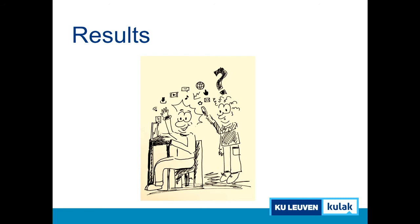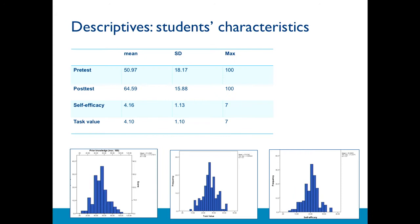For the results — I can use this cartoon because I drew it myself. Looking at the descriptives, comparing pre-test and post-test we see there was a learning gain. I added these graphs to show that there were a lot of differences among students. Some had high prior knowledge, some lower. Some were very motivated to learn French, some were not at all. Self-efficacy also showed a lot of variability.